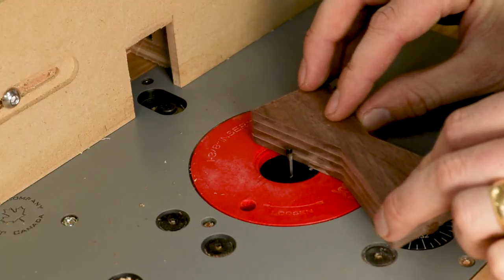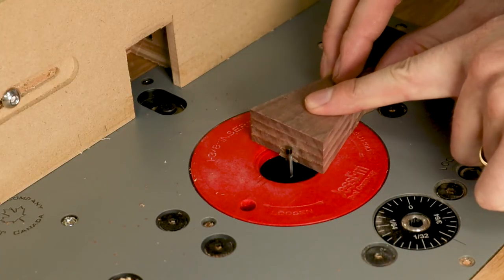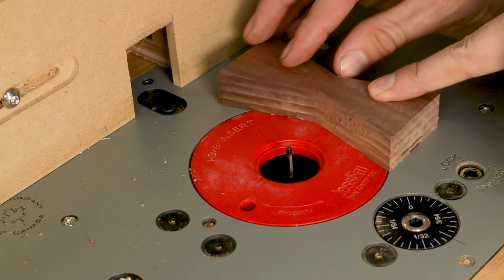Here I'm using a flush trim bit to remove the tabs left on the bow ties from the CNC.